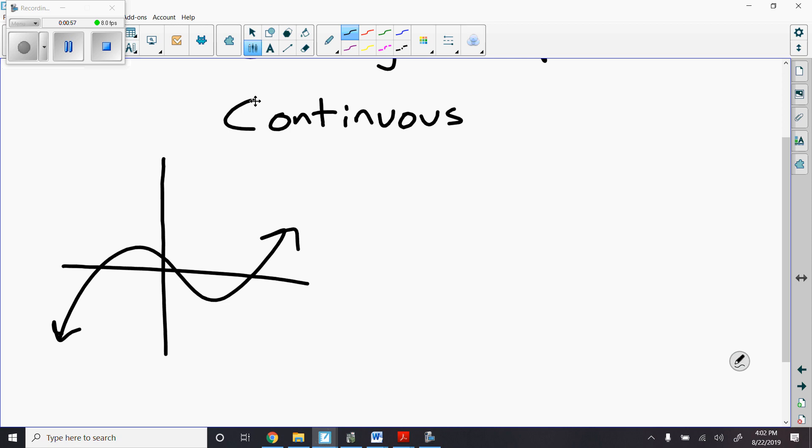That line is continuous. It's never broken. There aren't any holes. There aren't any jumps. There aren't any skips. There aren't any vertical asymptotes. Okay. So, when we think about continuous, I want to think about no holes, no jumps, no vertical asymptotes. So, that's what continuity means.